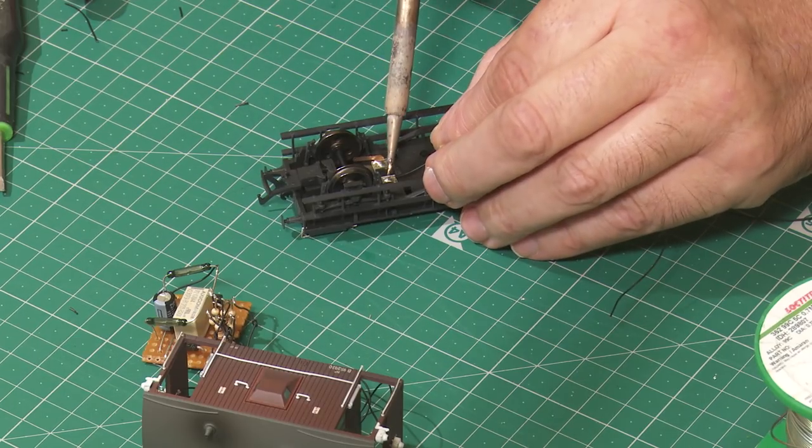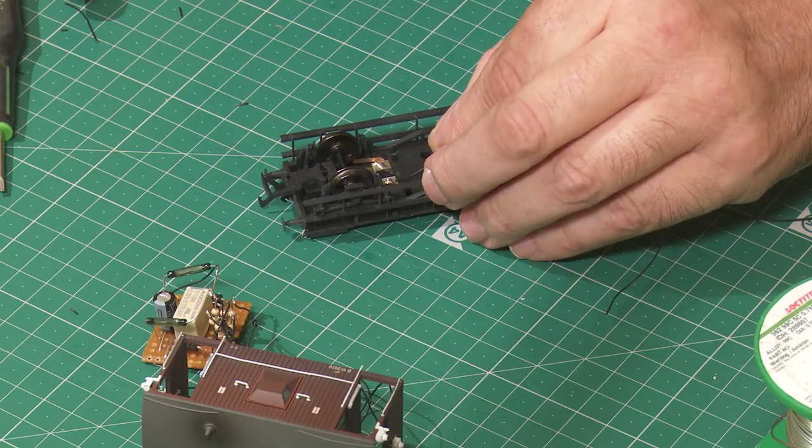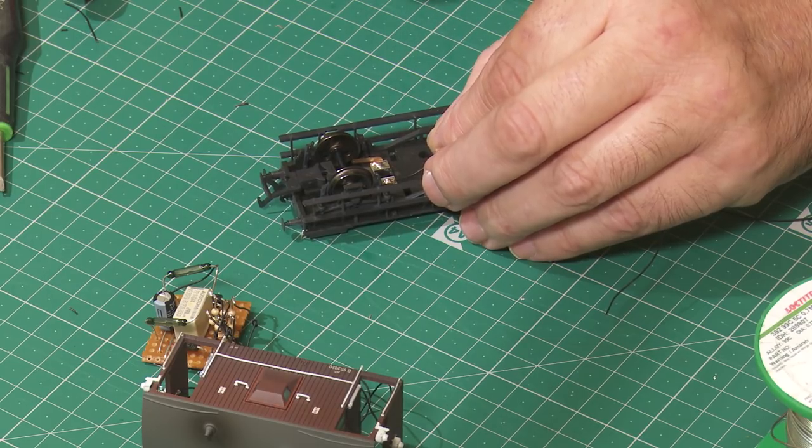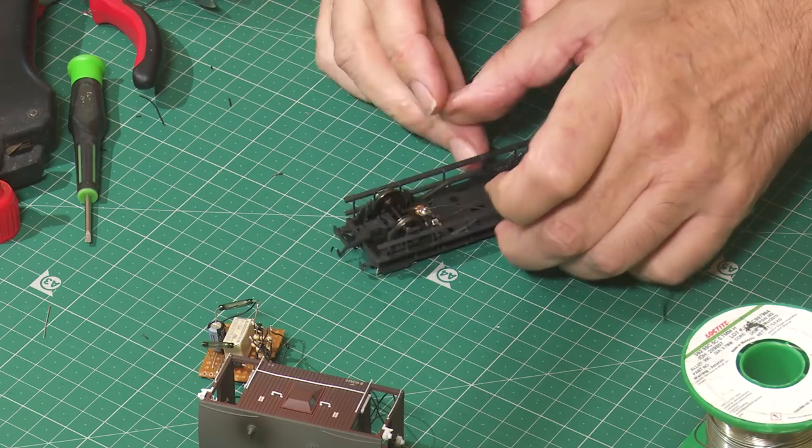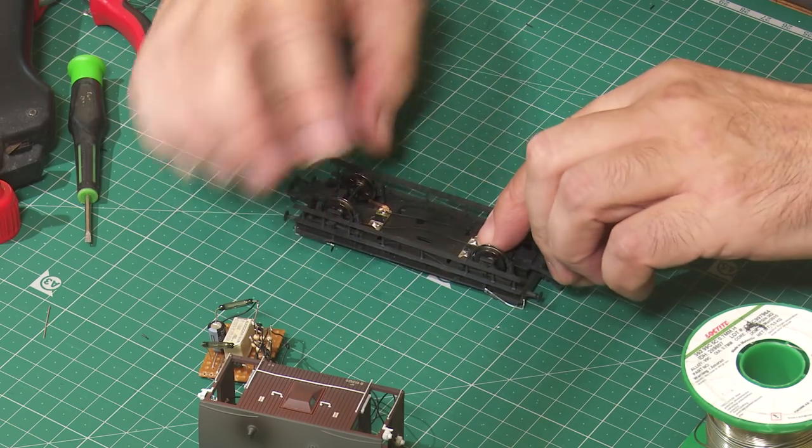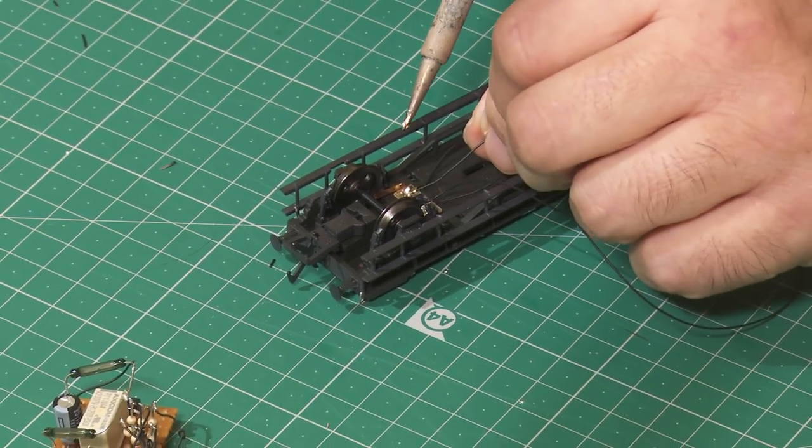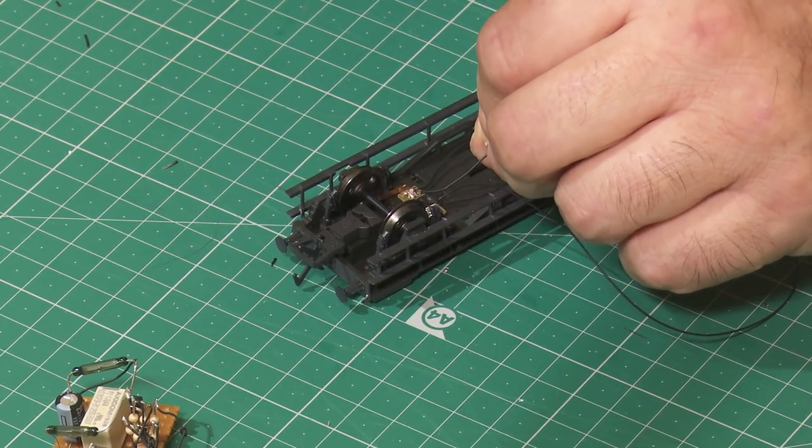Next, we need to solder a set of cables to connect both pickups together. Once they're connected, we can solder another set of cables which take the track power from the pickups into the body of the guards van.